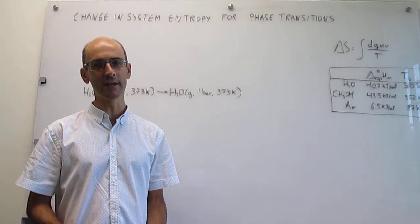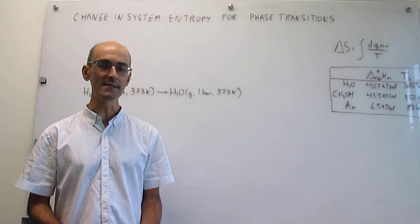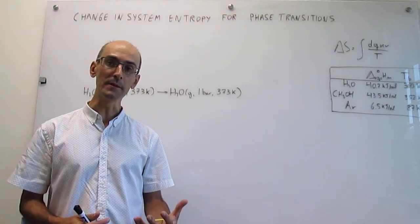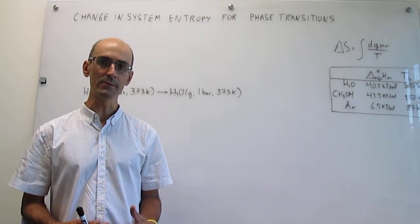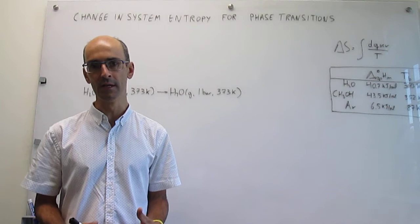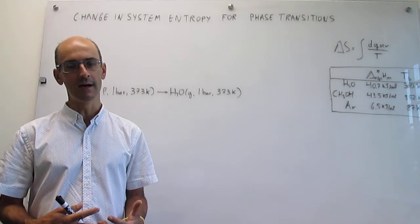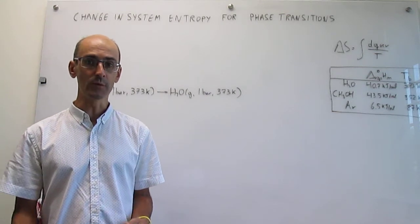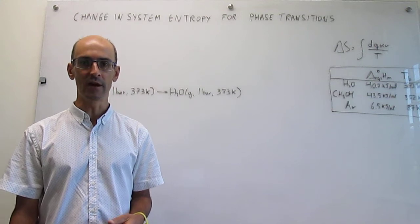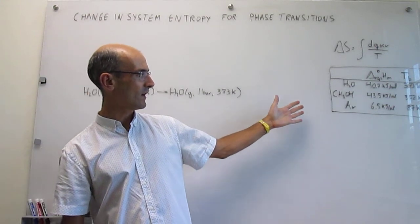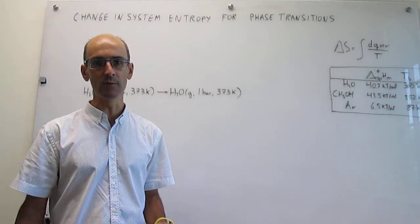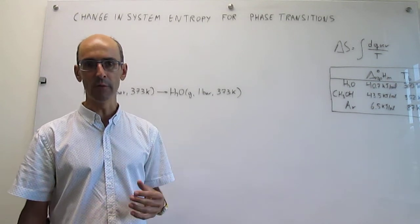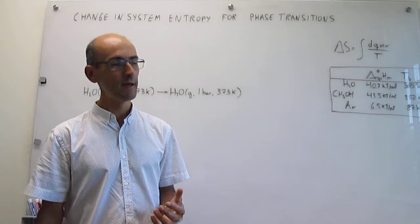In this video, we are going to learn how to calculate the tension entropy in the system during phase transitions. During our work with the first law on enthalpy, we talked extensively about phase transitions such as vaporization, fusion, sublimation, and the reverse — condensation, deposition, and freezing. We had tables with enthalpies at standard conditions of one bar, and here is a small fraction of one of those tables showing vaporization data for water, methanol, and argon, with the enthalpy of vaporization per mole and the boiling point.